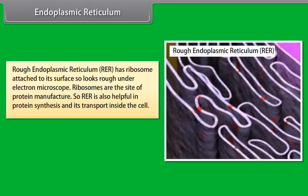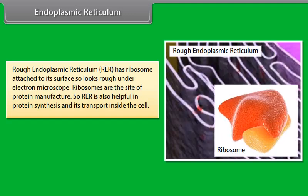Rough endoplasmic reticulum (RER) has ribosomes attached to its surface, so it looks rough under an electron microscope. Ribosomes are the site of protein manufacture, so RER is also helpful in protein synthesis and its transport inside the cell.